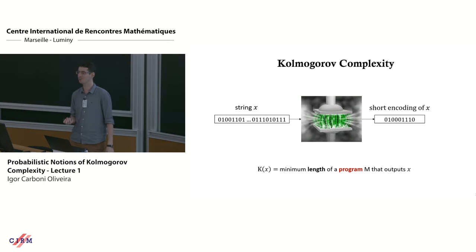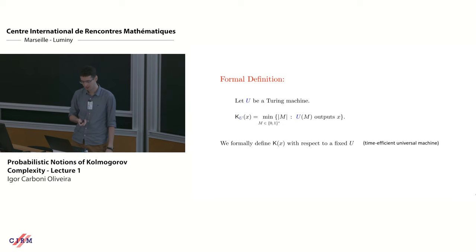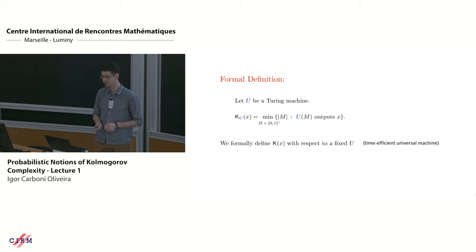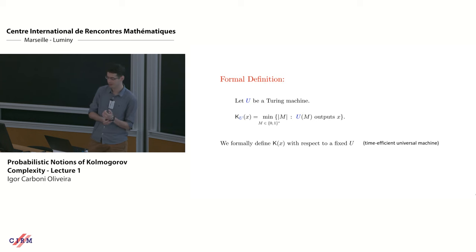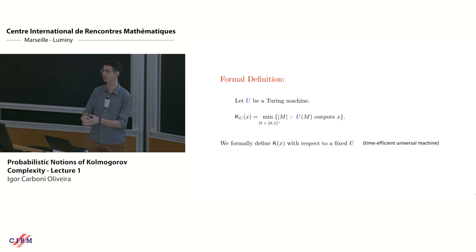Brief review: Kolmogorov complexity. We have a finite sequence of bits, and informally the Kolmogorov complexity of the sequence is the length of the shortest program that outputs the sequence. Formally, we fix a universal Turing machine U and define the Kolmogorov complexity of a string X with respect to U as the minimum length of a string M such that U on input M outputs X. Intuitively, M is a program — a description that outputs X. We'll fix a nice universal Turing machine that is not worse than any other machine by much and runs efficiently.